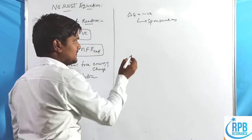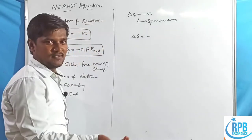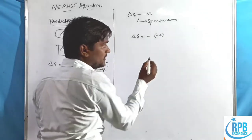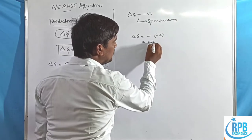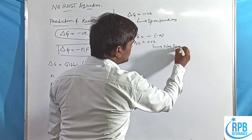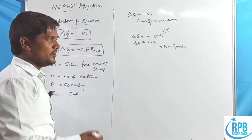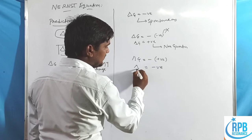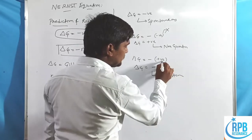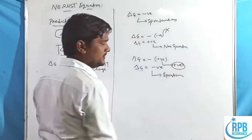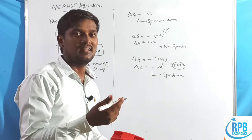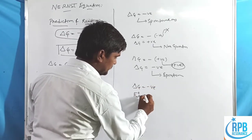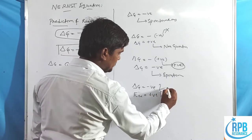If E_cell is negative, then ΔG = −(n)(F)(negative) = positive, indicating a non-spontaneous reaction. If E_cell is positive, then ΔG = −(n)(F)(positive) = negative, indicating a spontaneous reaction. Therefore, a negative ΔG and a positive E°_cell are both favorable conditions for a spontaneous reaction.